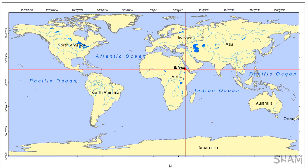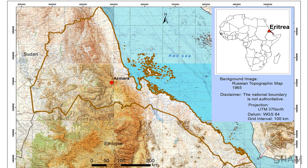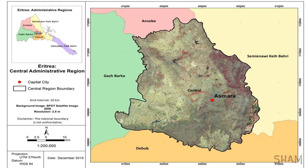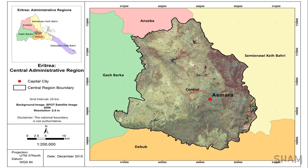As you can see on this world map, Eritrea is found in the Horn of Africa, or more specifically in Northeast Africa, surrounded by Sudan on the west, the Red Sea in the east, and Ethiopia and Djibouti in the south. You can see its administrative classification here. Its capital city, Asmara — which is now a world heritage site — is found in the central region.